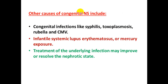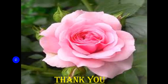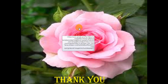Other causes of congenital nephrotic syndrome include congenital infections such as syphilis, toxoplasmosis, rubella, and cytomegalovirus, as well as infantile systemic lupus erythematosus or mercury exposure. Treatment of the underlying infection may improve or resolve the nephrotic state. Thank you for listening.